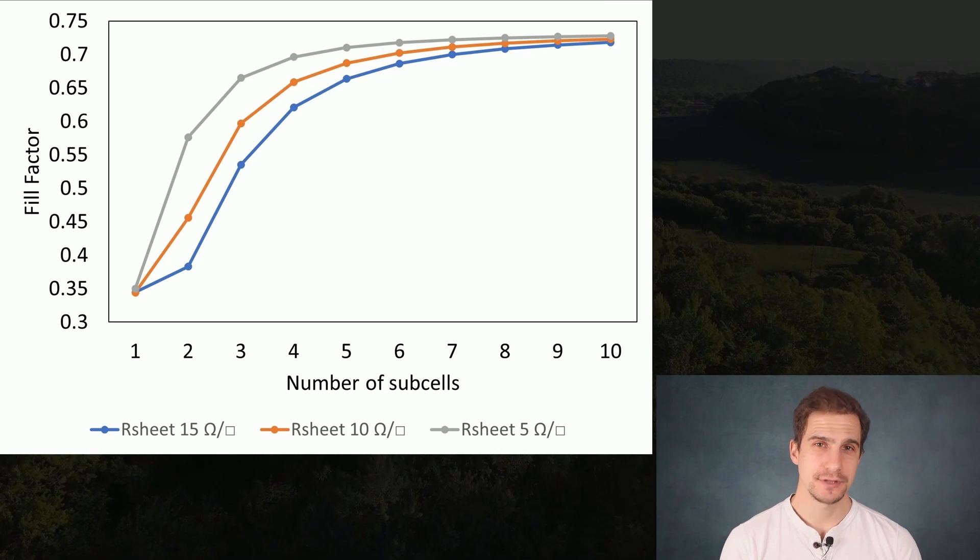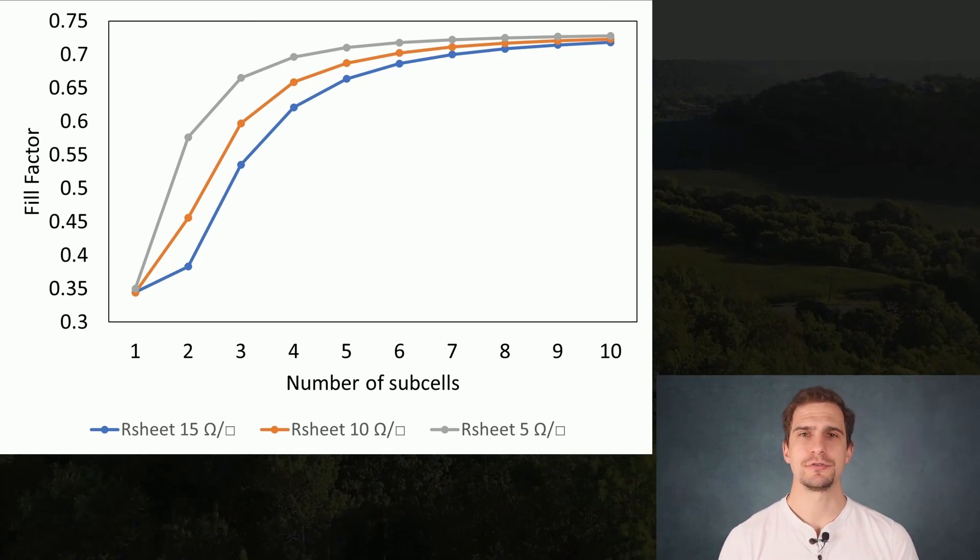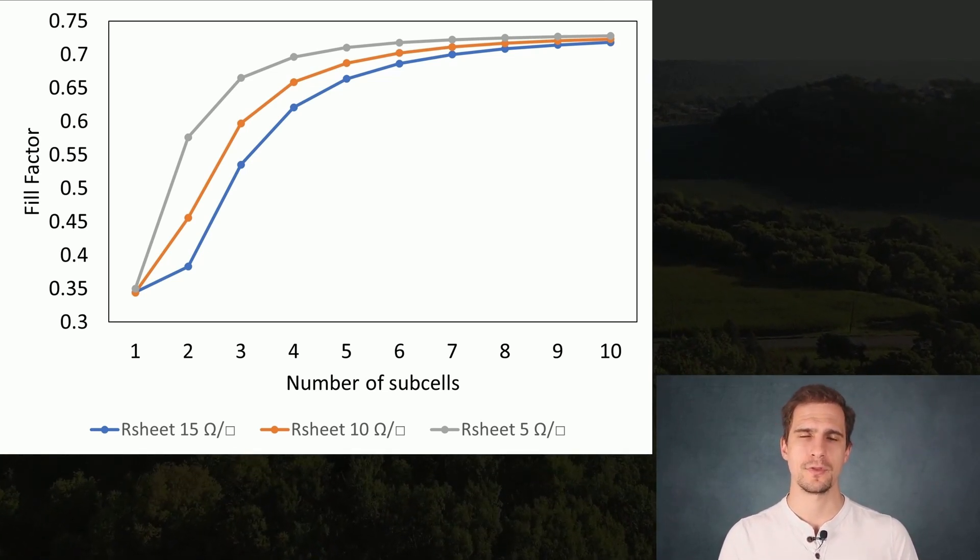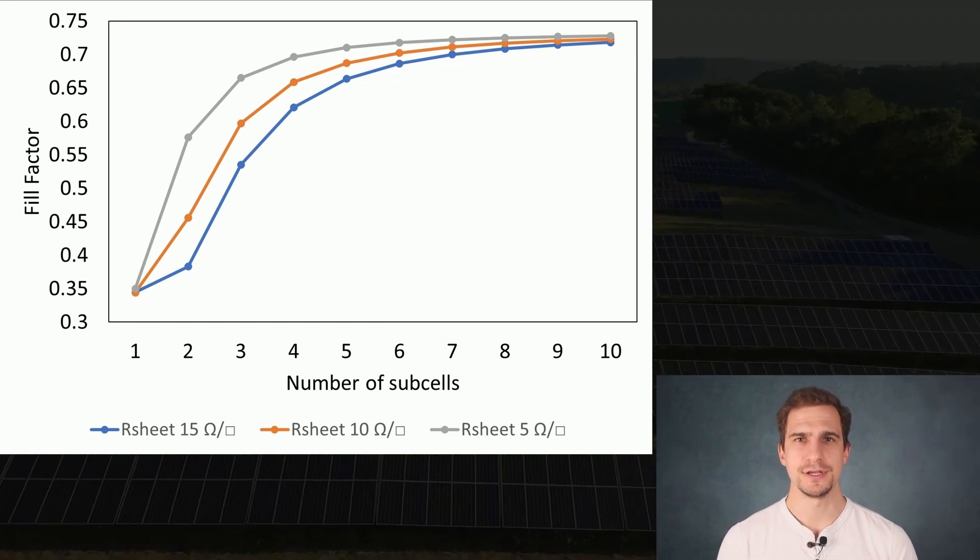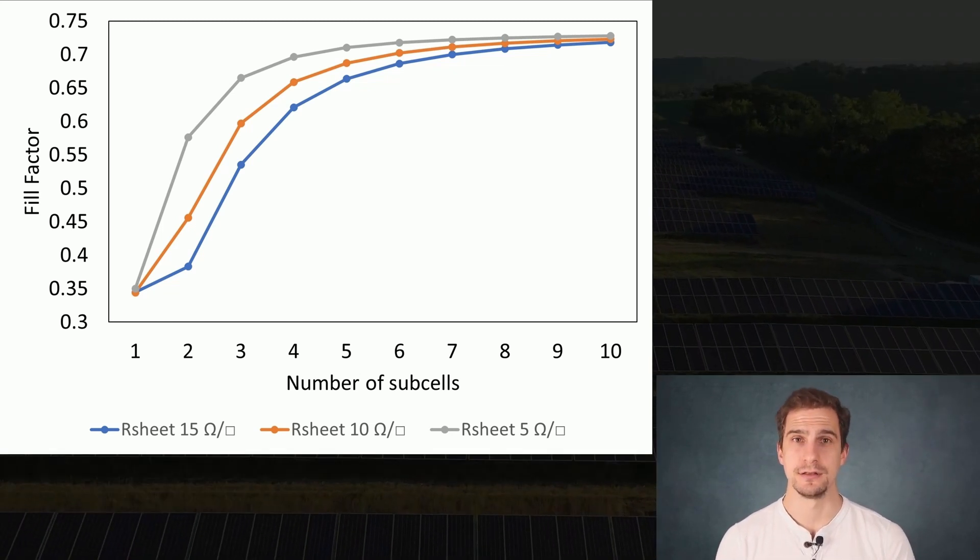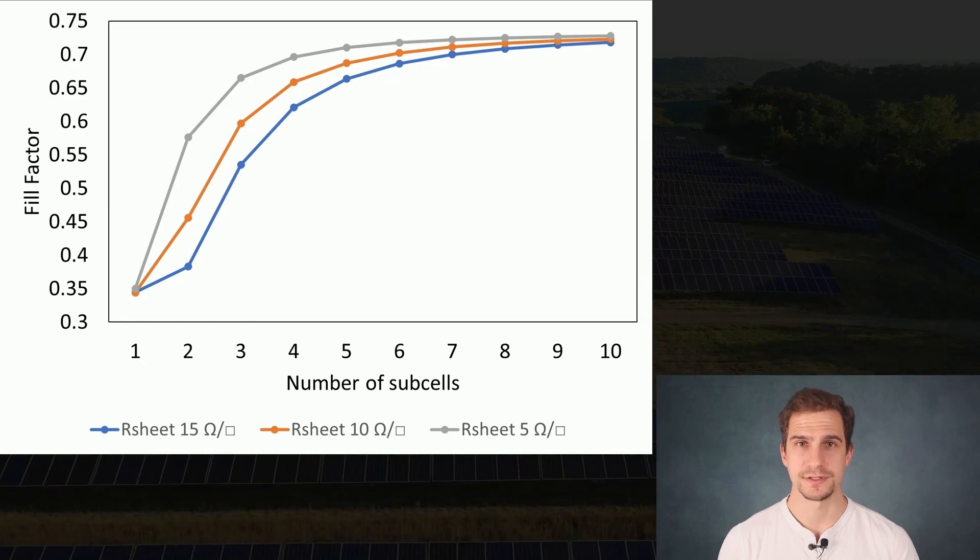The sheet resistance of the transparent conductive oxide also directly influences the fill factor. High sheet resistance can increase series resistance within the cell, reducing the fill factor and thus the overall efficiency.